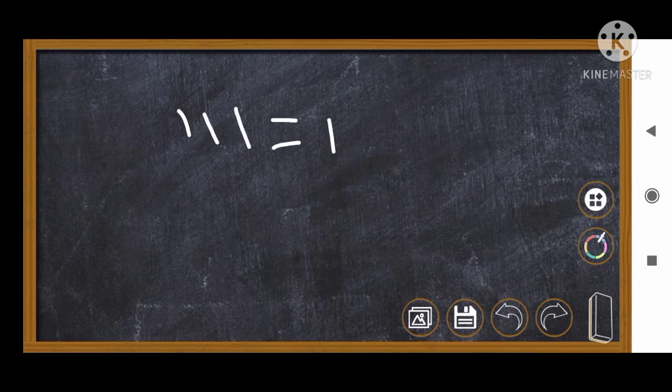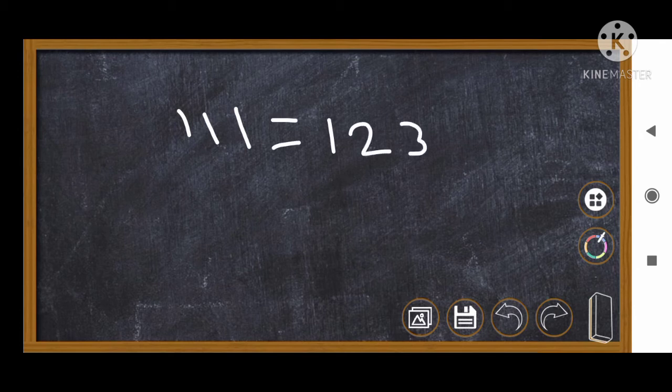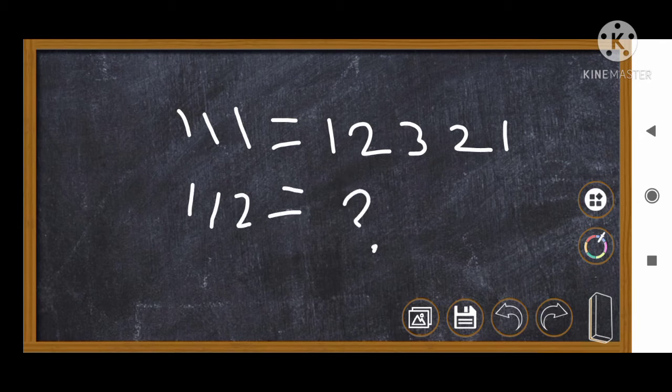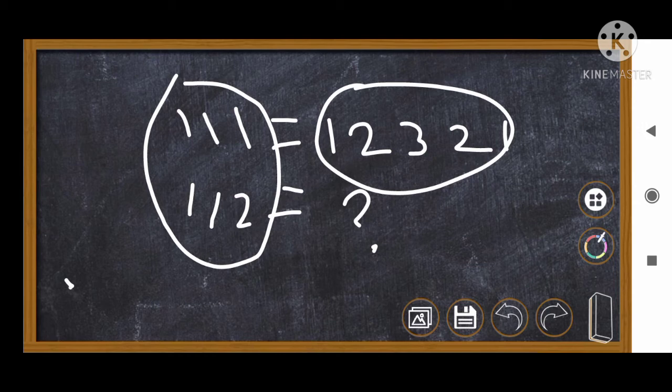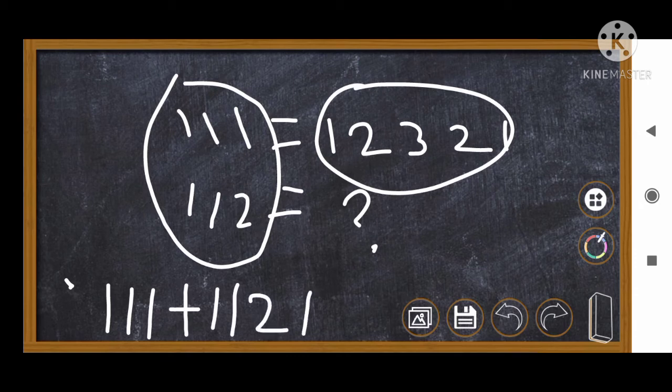Let's see. We have 111. We have to know 1, 2, 3, 2, 1. We use the formula: 111 plus 112 plus 123, 2, 1. It will be equal to answer. What will the answer be equal to?